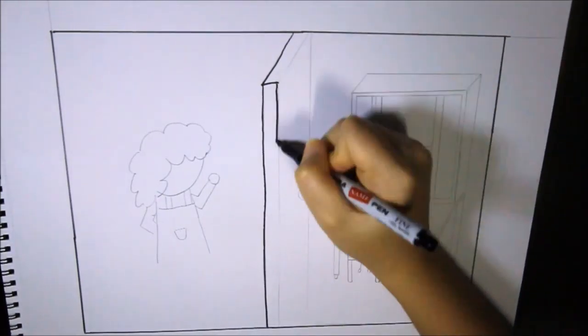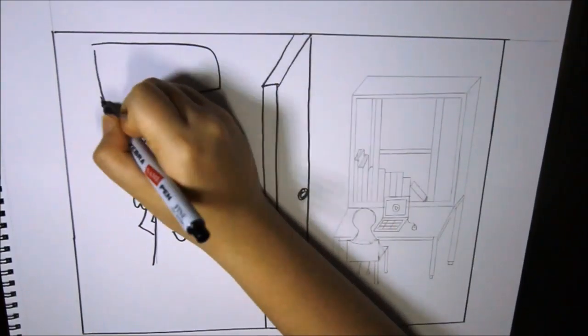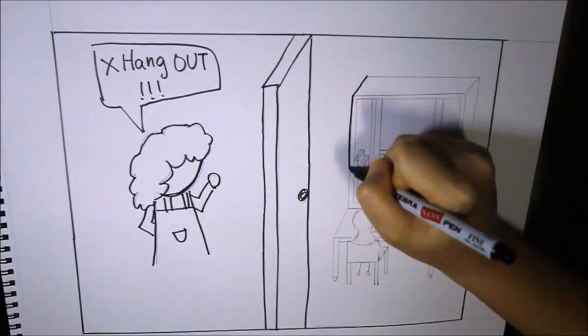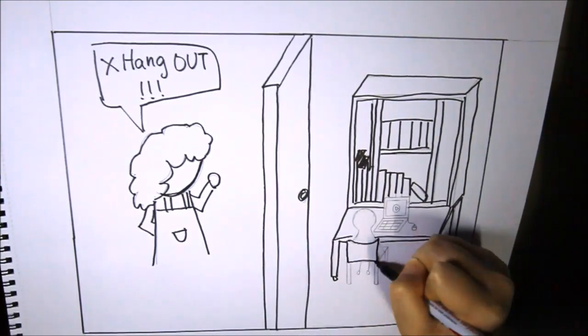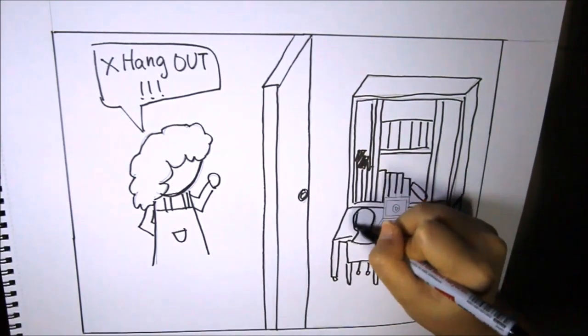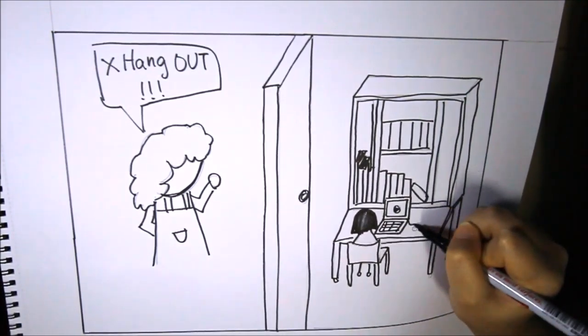As media scholar Dana Boyd claimed, social media enables teenagers to escape the confines of strict parenting and form communities with friends on their own terms. When parents deny their children the opportunity to go out with their friends, teenagers lock themselves in their bedrooms, log on to the virtual world, and establish a presence on social media.